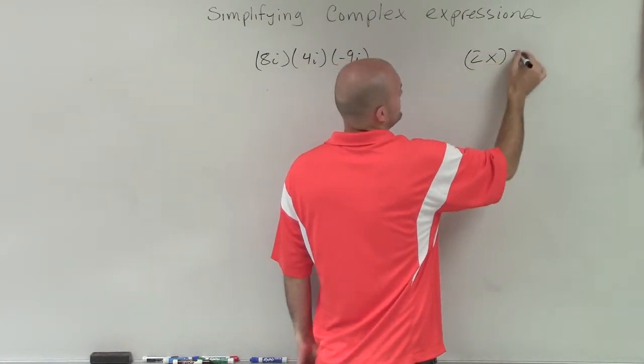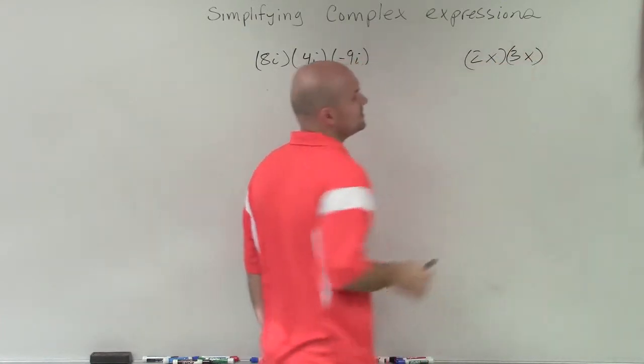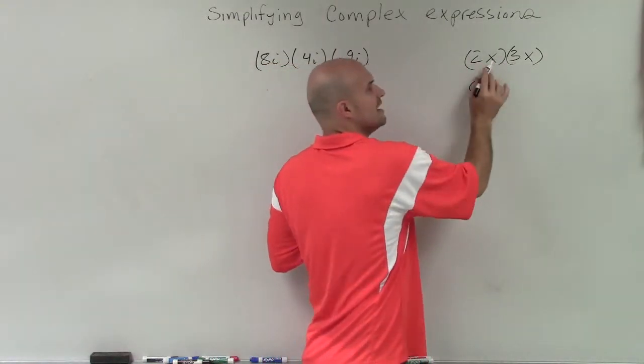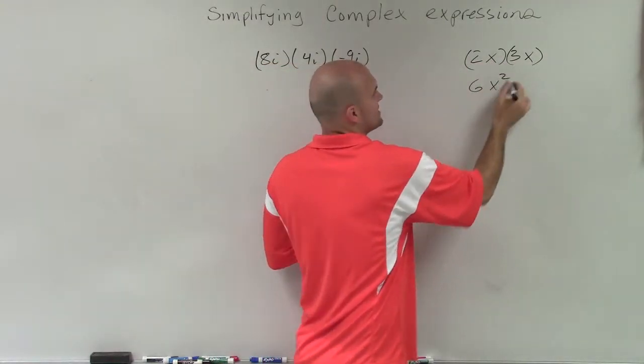What if I had 2x times 3x? What we're doing in this example is we multiply the 2 times the 3 to give us 6, and then we multiply the x times x to give us x squared.